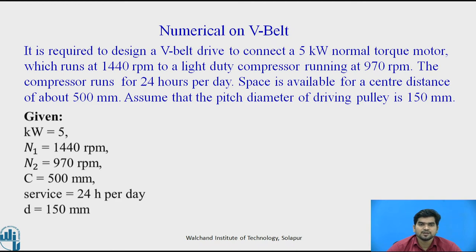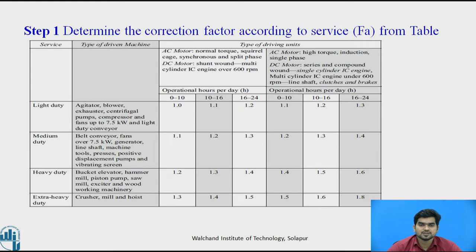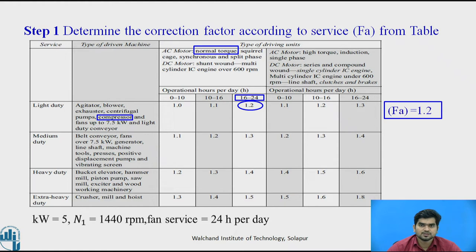As per the given data, we have to find out the proper type of the V-belt. We will go by steps. Step 1 is to determine the correction factor according to the service from the table. From these tables we have to find out the service factor, which totally depends upon the application. The power is 5 kilowatt, the speed of the faster shaft is 1440 rpm, and we have to run the compressor for 24 hours per day with normal torque. From the table, the value of FA is 1.2.